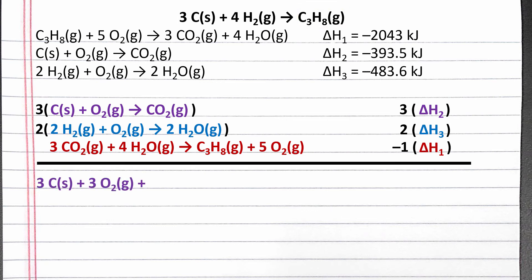Now we can add together these reaction steps. From the first reaction, we have three moles of solid carbon and three moles of oxygen gas. We need to distribute the three out front to all of the coefficients for both reactants and products. From the second reaction, we have four moles of hydrogen gas and two moles of oxygen gas. And from the third reaction, we have three moles of carbon dioxide gas and four moles of water vapor.